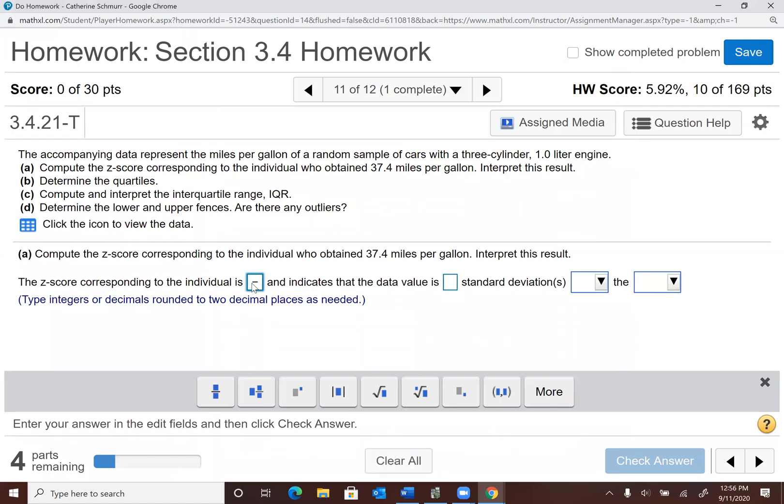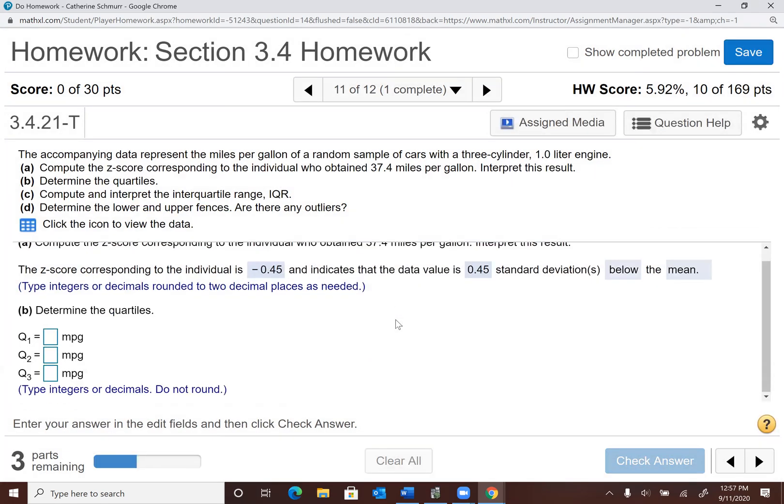So the z-score can be negative. Negative 0.45. And that indicates that the data value is how many standard deviations above or below the mean. So this part over here is always going to be mean. Your z-score tells you how far you are from the mean. The value that you put here, the number of standard deviations, you're always going to put a positive value. And then when you're selecting whether it's above or below the mean, you're going to go by the sign that you have on your z-score. So I have a negative z-score. That means that my value was below the mean. If I had a positive z-score as my first answer here, I would say that the value is above the mean.